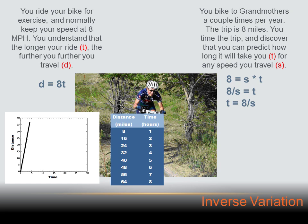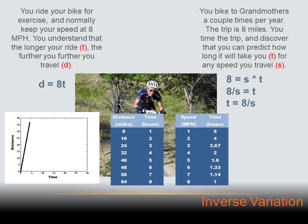Eight miles is going to equal the speed I travel times the amount of time I travel. I can rewrite that expression — divide both sides by s — and get eight over s equals t. Turning that around: time equals eight divided by speed.